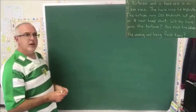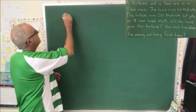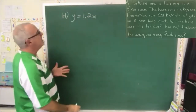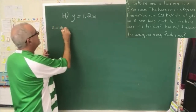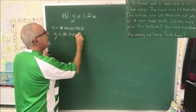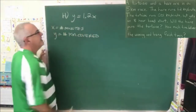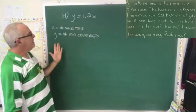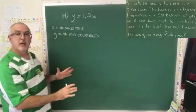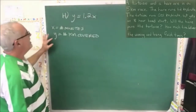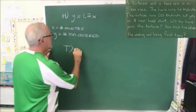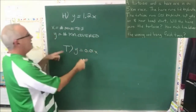Therefore, we have the equation for the hare of y equals 1.2x. This only makes sense if we define our variables: x equals the number of minutes, and y equals the number of kilometers covered. I also need an equation for the tortoise, and it's obvious from the information given that I expect it to be y equals 0.01x, using the same variables.